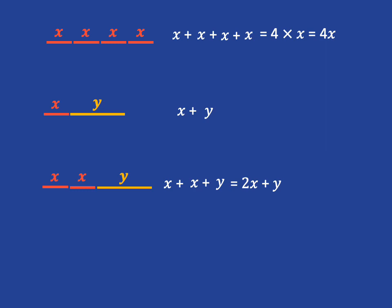To be a like term, it has to be the same variable. But even more than that, if we had Y squared, and we want to add Y to it...